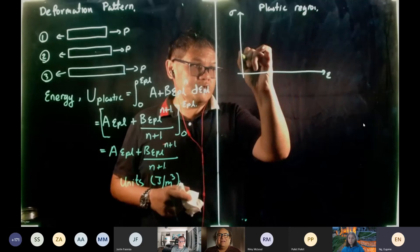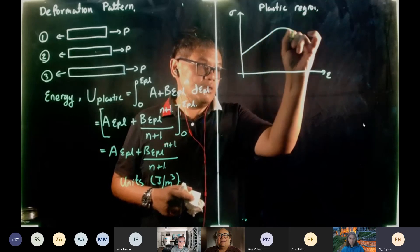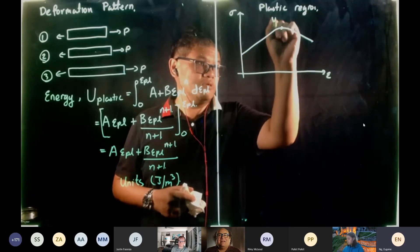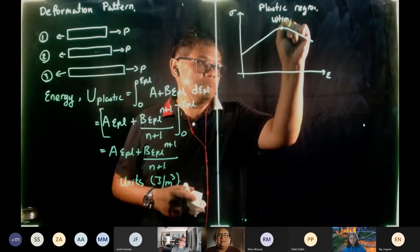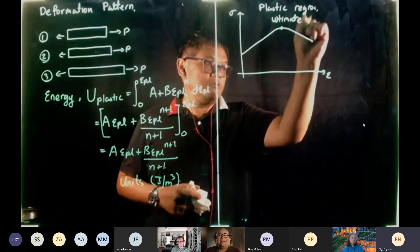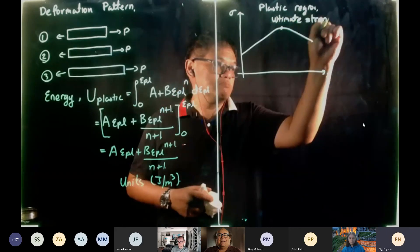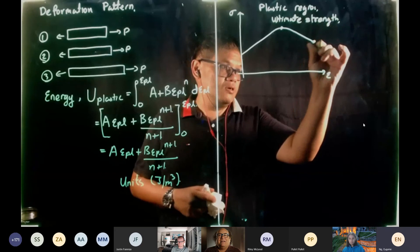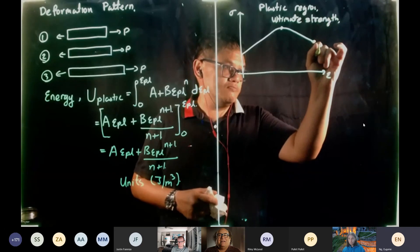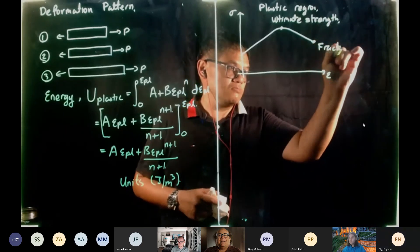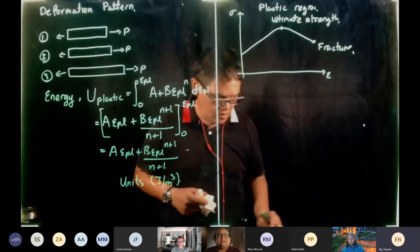So in the necking region now. So this is still the plastic region. So plastic region. So we drew this earlier, and then it comes here. So this is the ultimate strength.